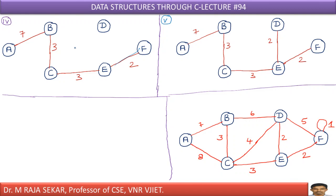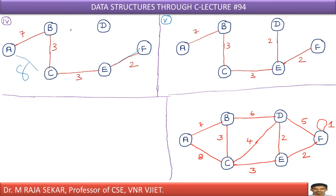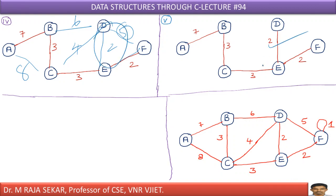Now, how many edges do we have? 1, 2, 3, 4. How many vertices? 1, 2, 3, 4, 5, 6 — meaning I need 5 edges total, since N vertices requires N-1 edges. I must search for one more edge. From A, I have 8; from B, I have 6; from D, I have 4 and 2; and another possibility is 5. The minimum among these is 2, so I am choosing that one.